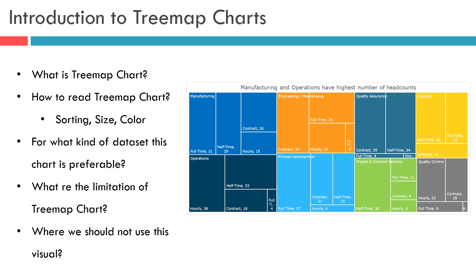Now let us understand how to read this Treemap Chart. Treemaps provide an accessible way for viewers to interpret data briefly. There are a few things to keep in mind while reading this chart: the first is the sorting of each rectangle, the second is the size of the rectangles, and the third is the color of the rectangles. The rectangles in a Treemap are sorted by size, starting with the largest in the top left corner and progressing down to the smallest in the bottom right.